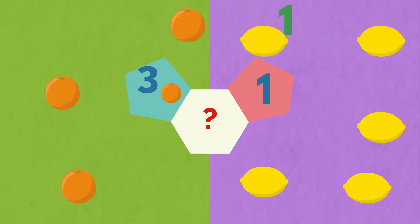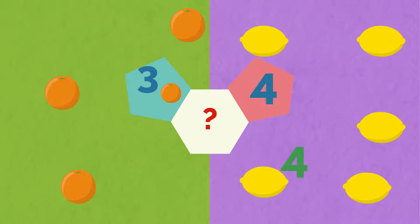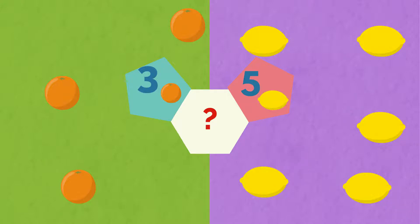One. Two. Three. Four. Five. Five lemons. Three is less than five. The oranges are less than the lemons.